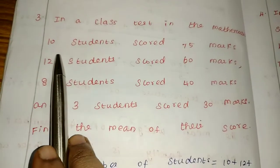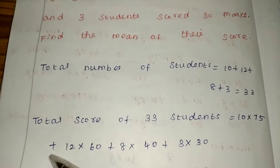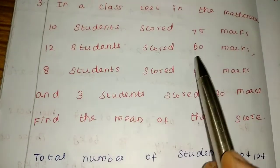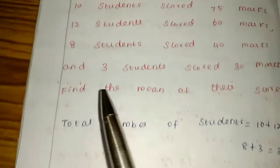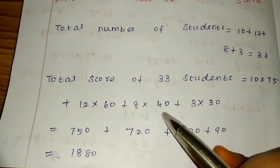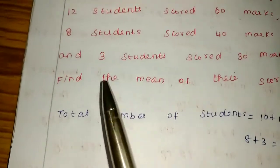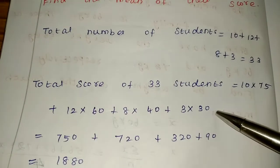First, how many students scored 75? 10 students. So 10 into 75, plus 12 students scored 60, so 12 into 60, plus 8 students scored 40, so 8 into 40, plus 3 students scored 30, so 3 into 30.